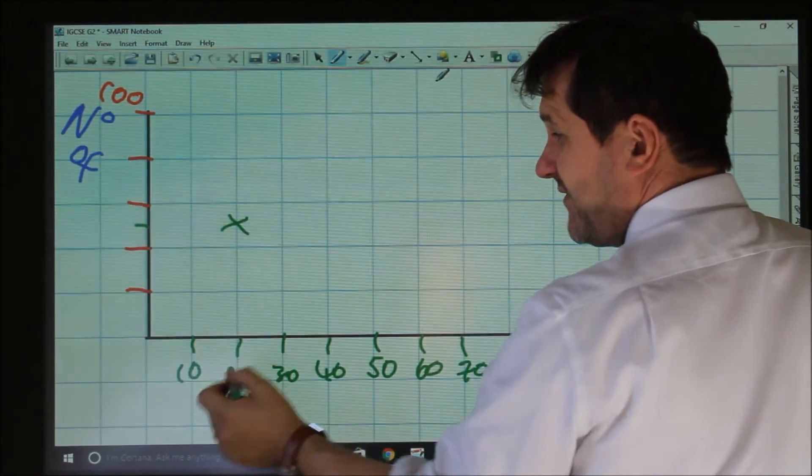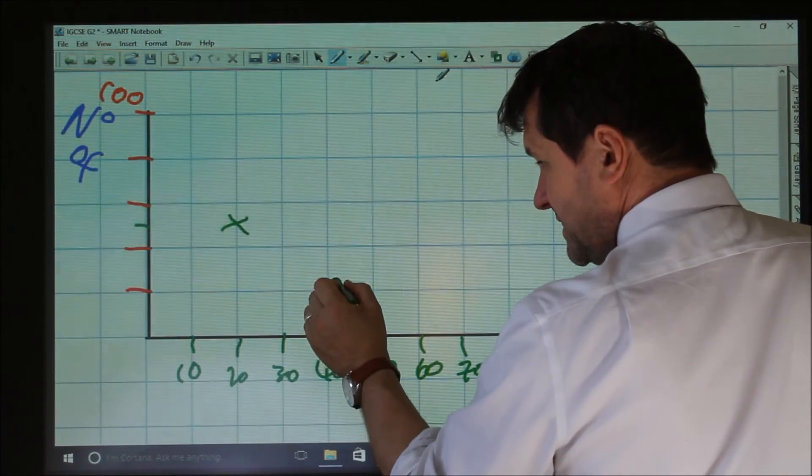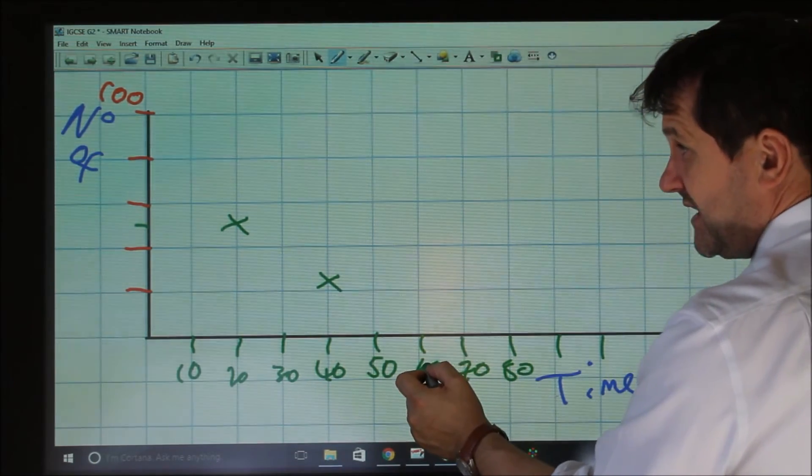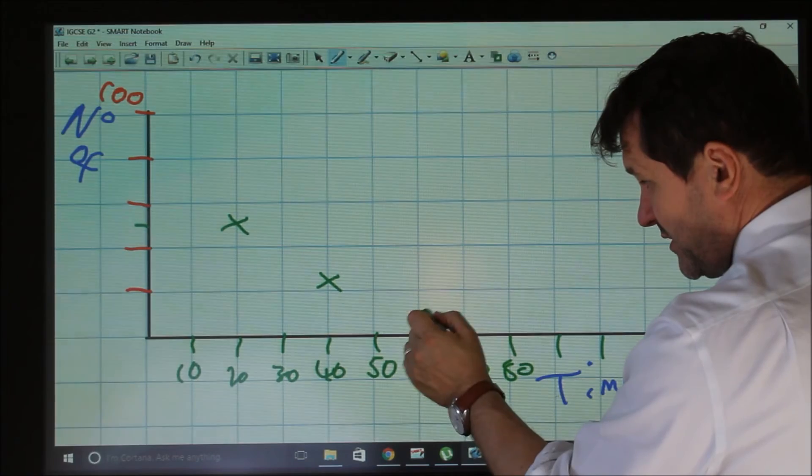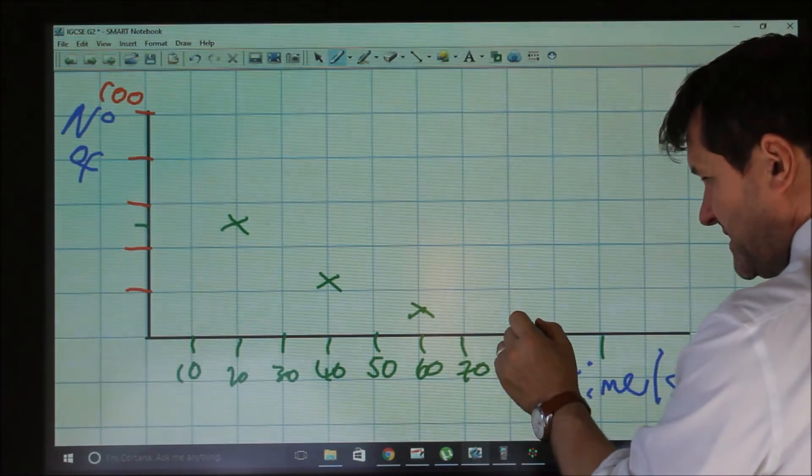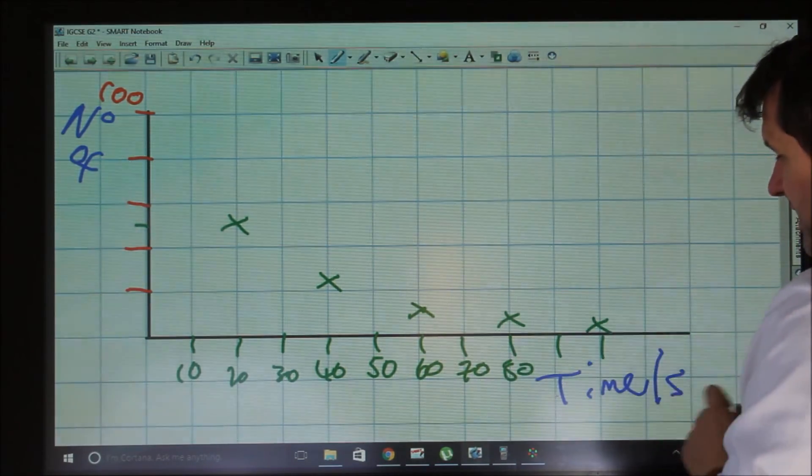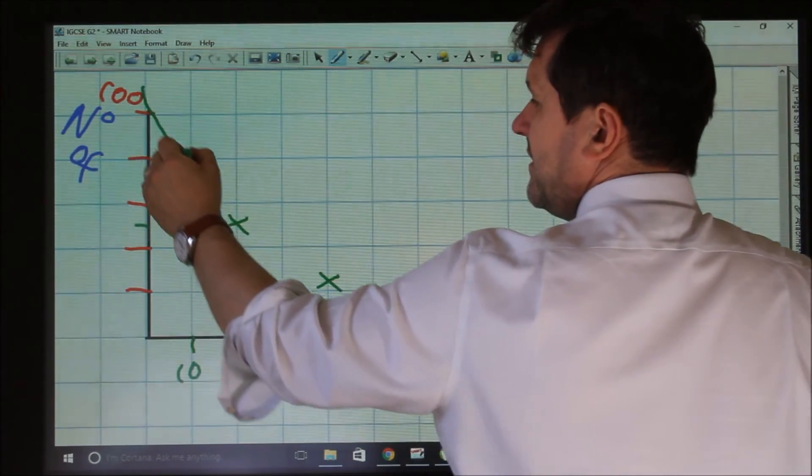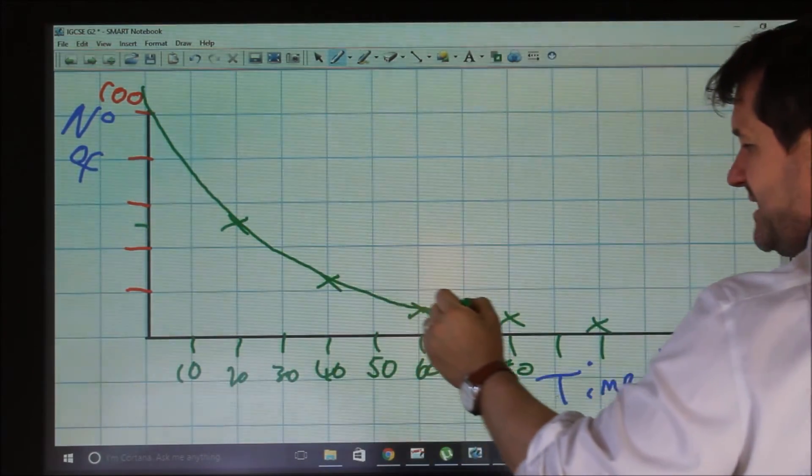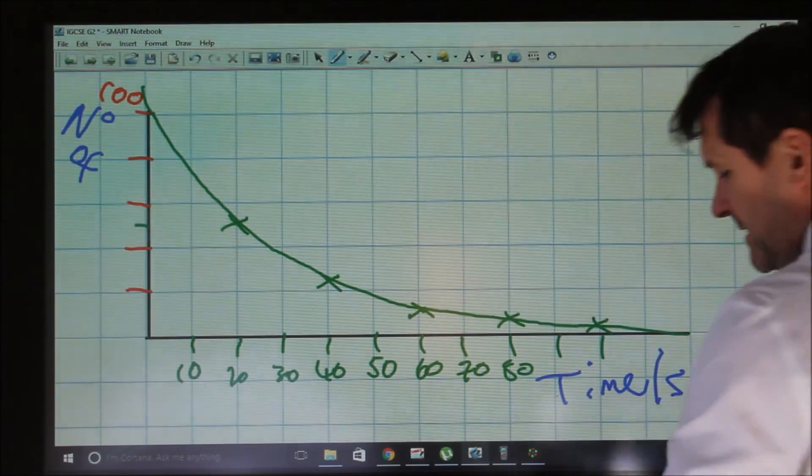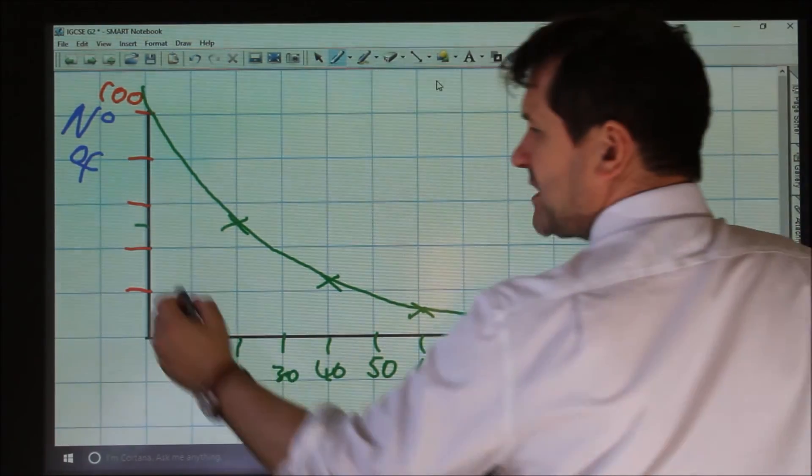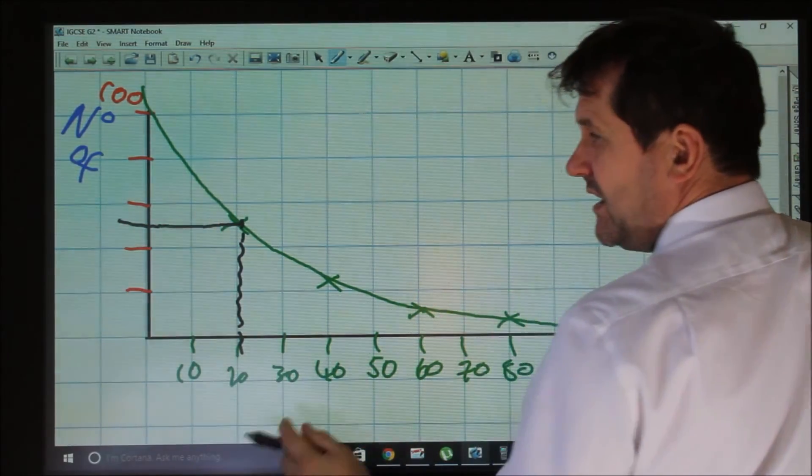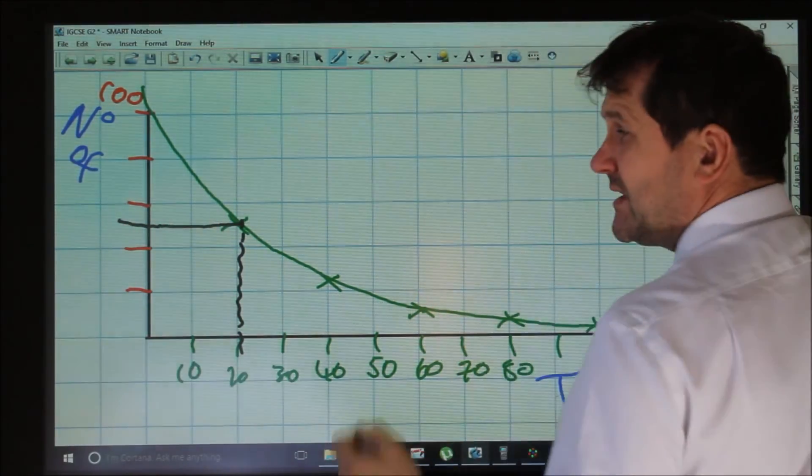Half of 50 is 25, so we could put a point about there. In another half-life, half of 25 is 12, so we put another one about there, then 6 and 3 and so on. What we find is our graph shows this exponential decay. We can see if we go to half our original value, we see the half-life is 20, and if we halve that again, we can see that's another half-life.